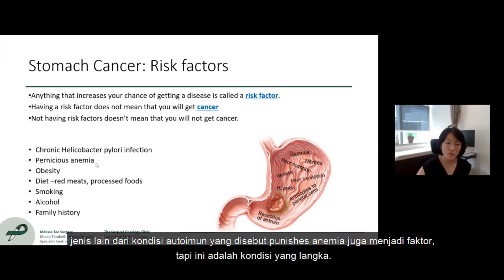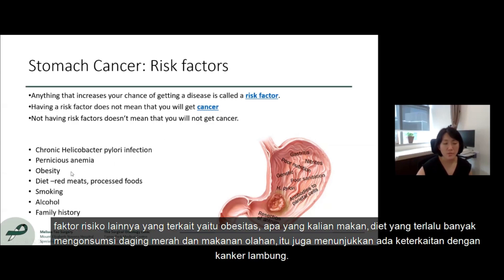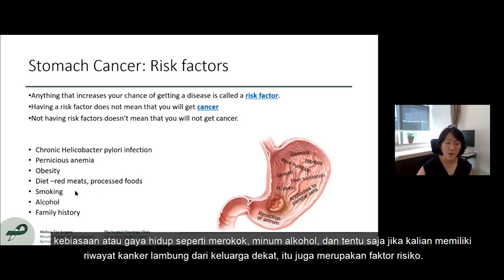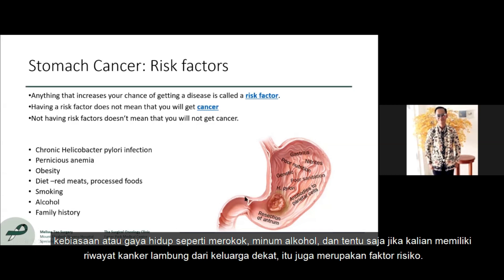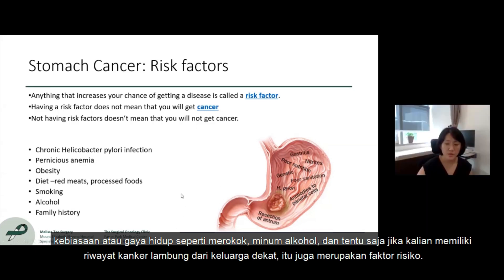Another risk factor is an autoimmune condition called pernicious anemia, though this is a rare condition. Other risk factors include obesity and diet — if you have a diet that is very high in red meats and processed foods, that has also been shown to be associated with stomach cancers. Lifestyle habits like smoking and alcohol are risk factors as well, and of course, a strong family history with a first-degree relative who has had stomach cancer is also a risk factor.